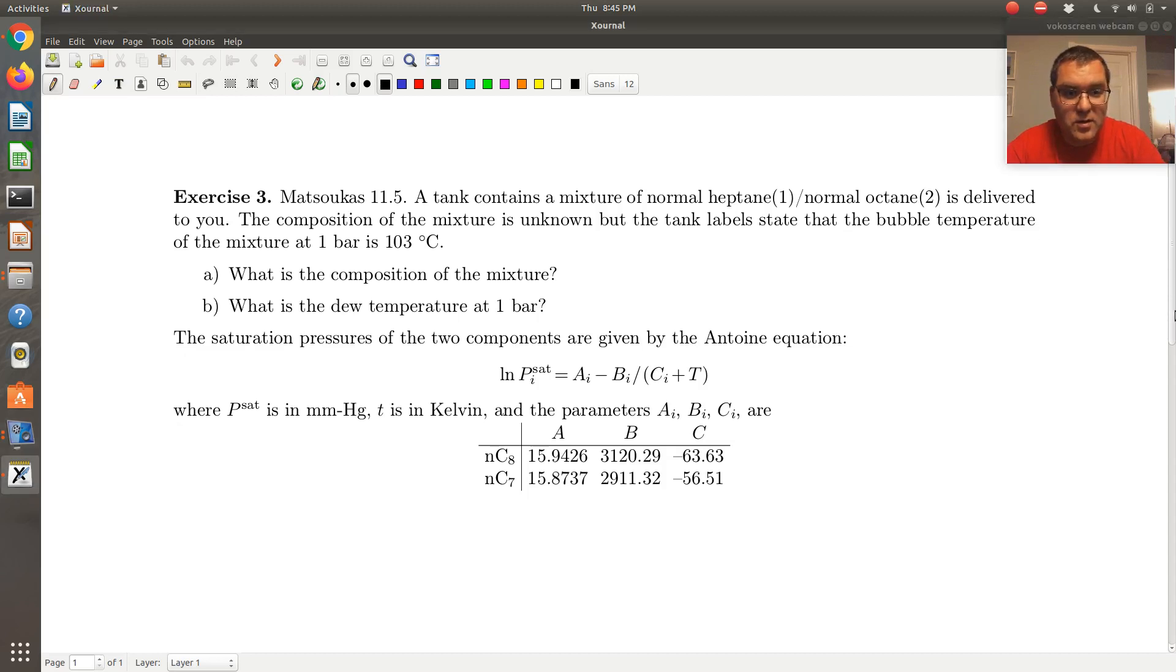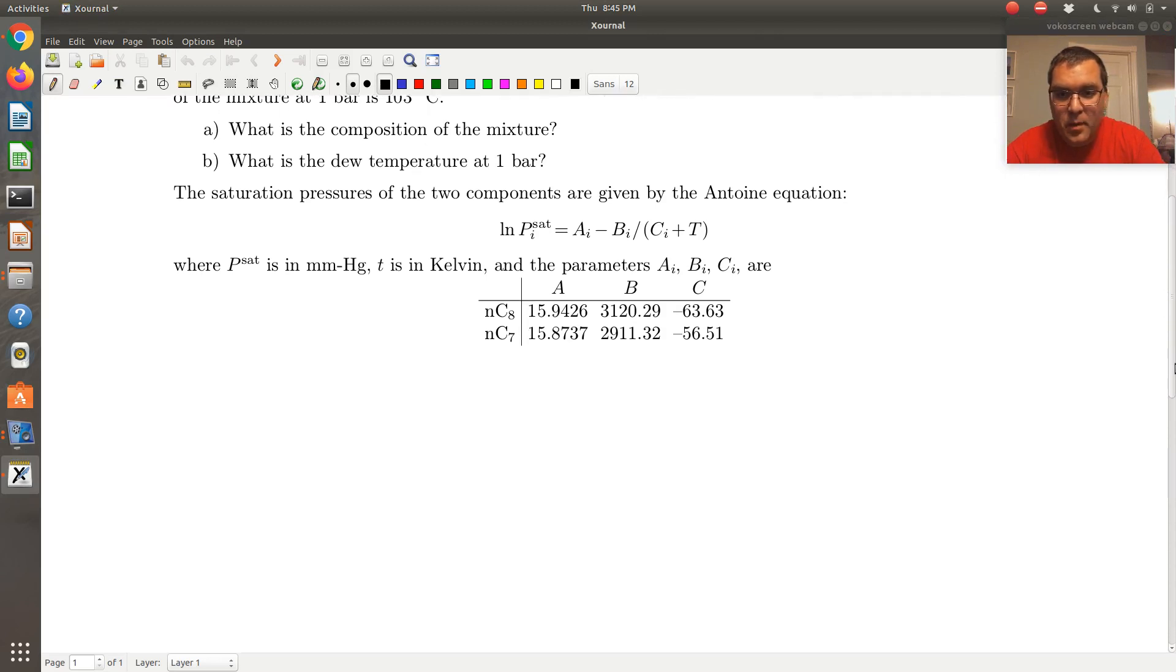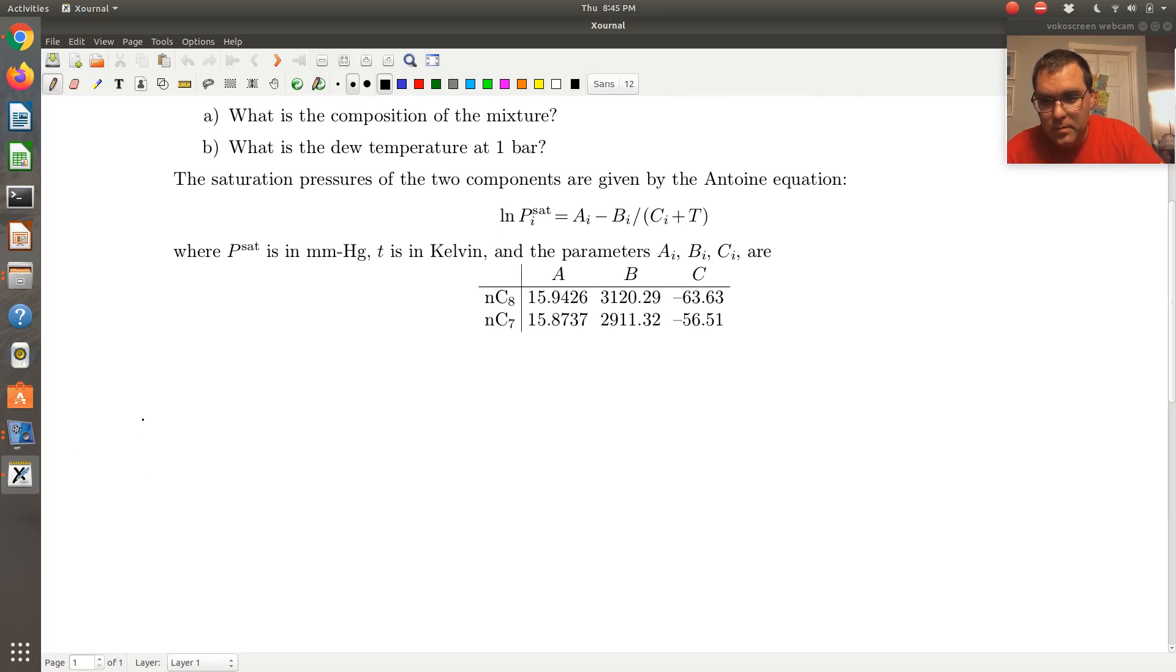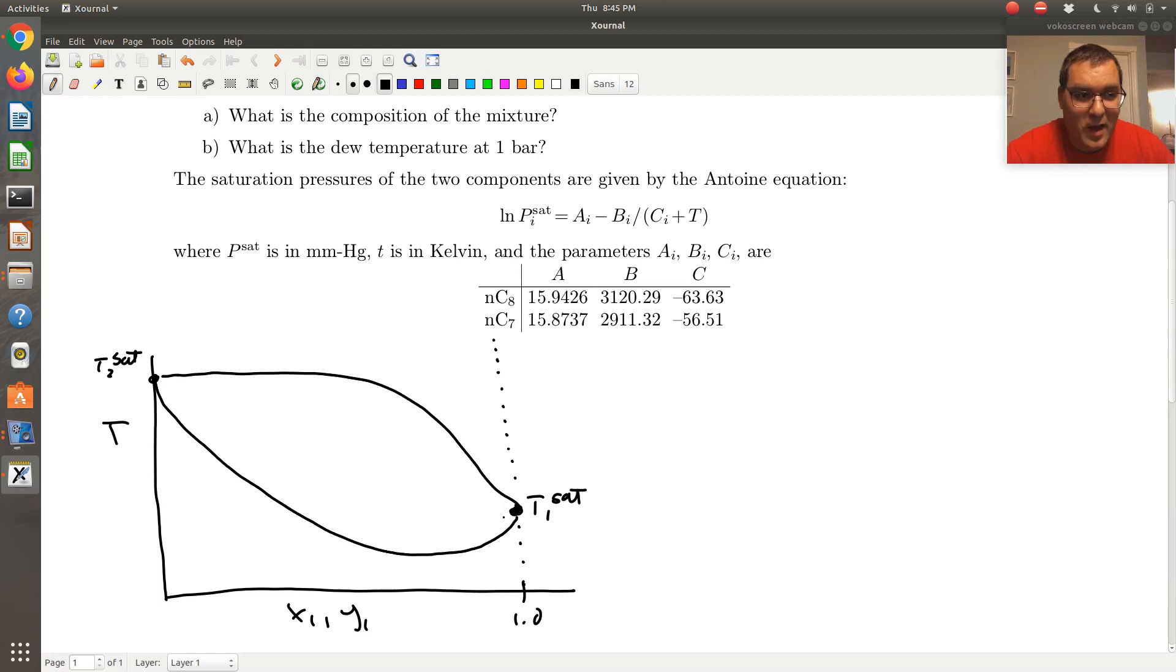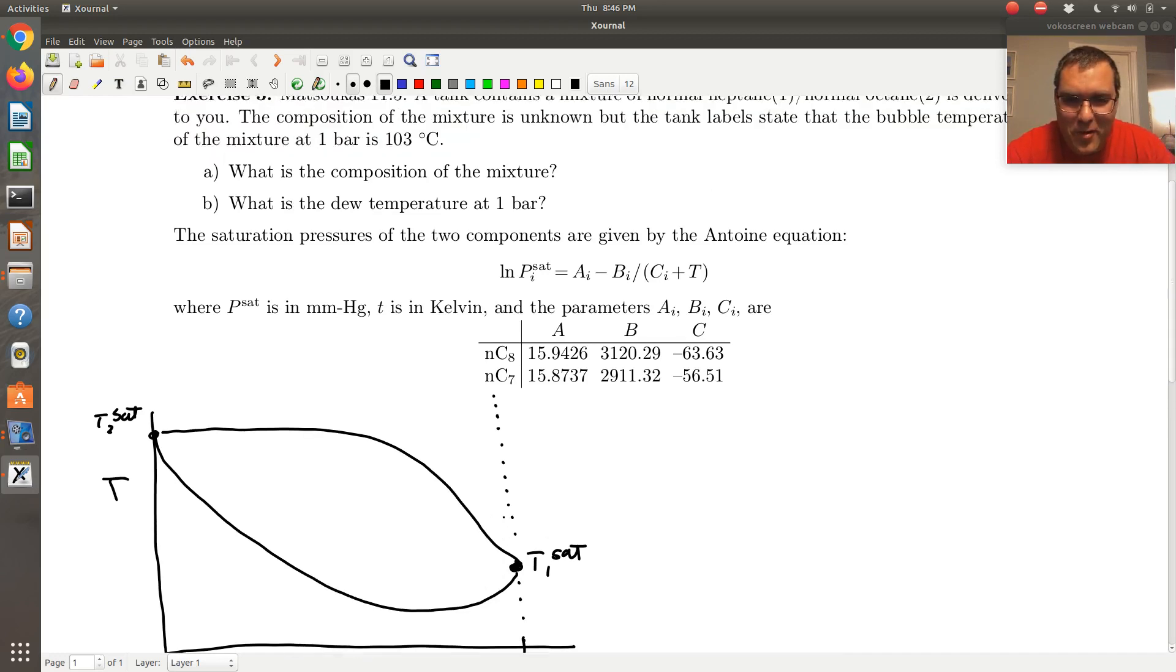And so C7, heptane, will take to be our most volatile component. So if I'm drawing TXY, I'm going to look at my pure component limits. My most volatile component is going to boil most easily, so it's going to have a smaller pure component saturation temperature. So this will be T2^sat up here. I'm going to sketch my phase diagram, which looks awful, but hopefully it's good enough to get the point across in the problem.